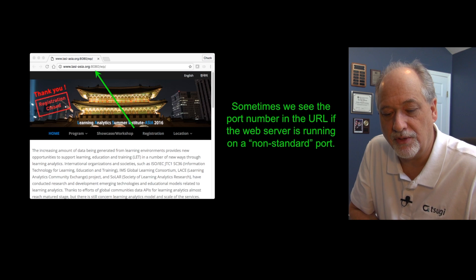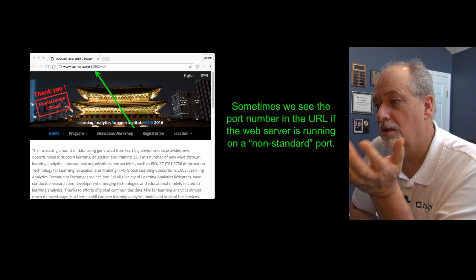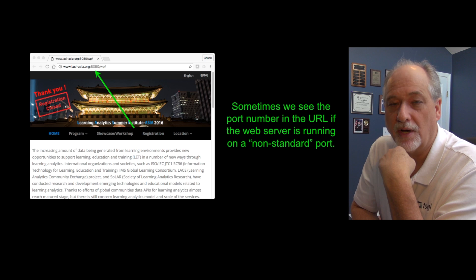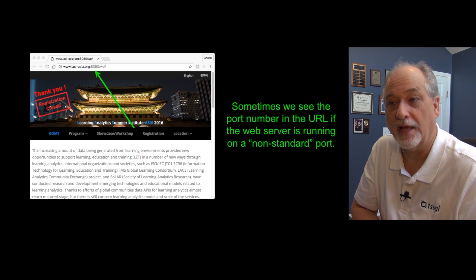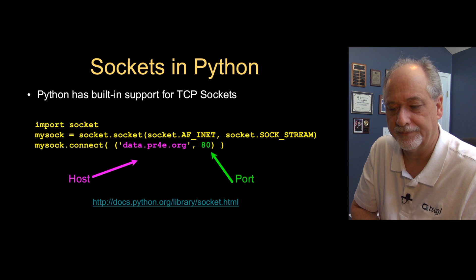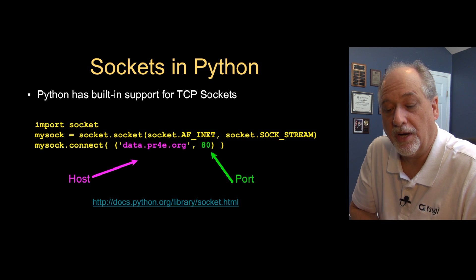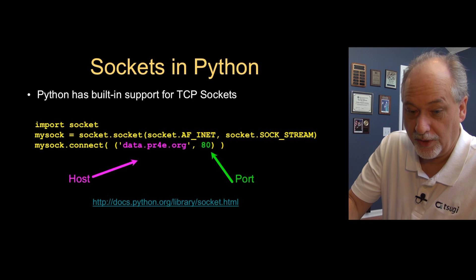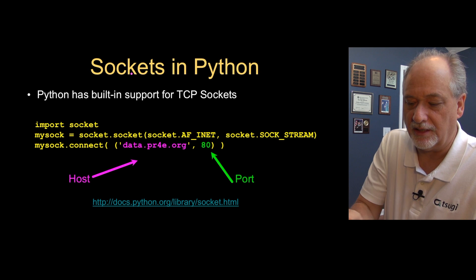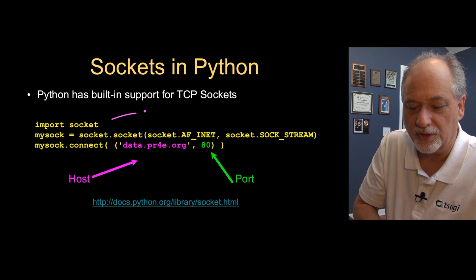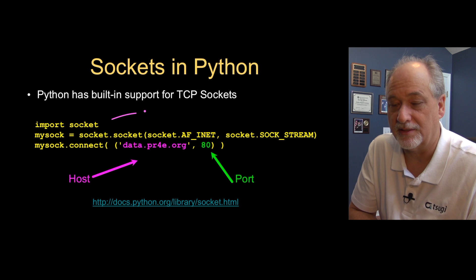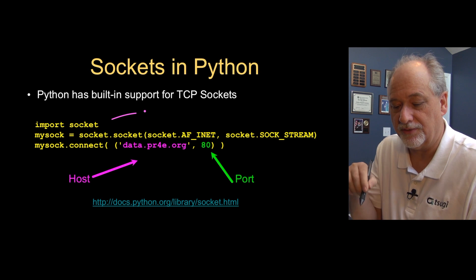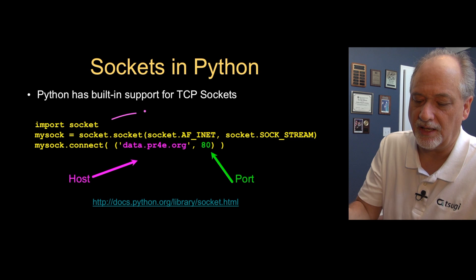Sometimes you'll go to a URL and you'll see a colon and a number in that URL. That means it's a web server running on a port other than the official 80 or 443. Now in Python, we can talk to these sockets — it's really easy, surprisingly easy. We have to import socket, because that's a library. It comes with Python, but you can't use it in your program until you declare it.